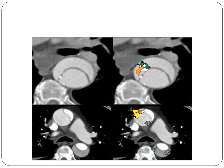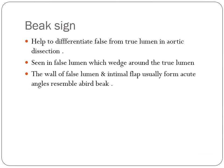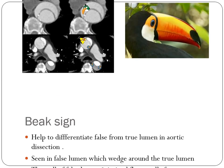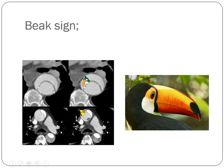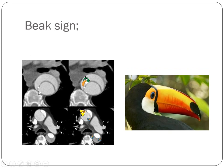The big bird sign helps differentiate the false from the true lumen in aortic dissection. It is seen in the false lumen, which wedges around the true lumen. The wall of the false lumen and intimal flaps usually form an acute angle resembling a bird beak. The lumen that has the beak is the false lumen.